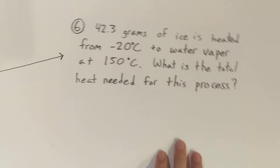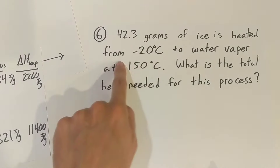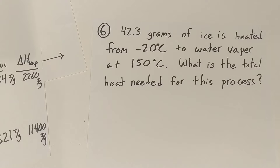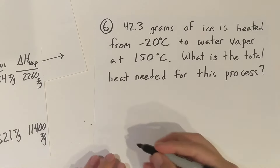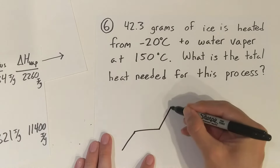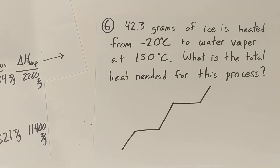Alright, we got one more. Question number six is by far the longest. In this one, we have 42.3 grams of ice heated from negative 20 degrees Celsius to water vapor at 150 degrees Celsius. We are doing all five steps here, so this will be a considerably longer problem. We're going from ice, melting it, heating that water up, boiling it, and then heating that water vapor up. Let me mark some important numbers we're going to be using.